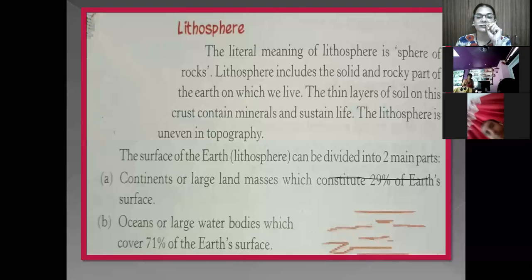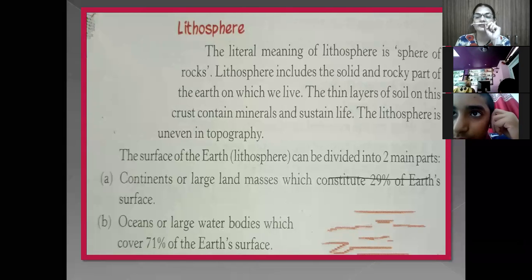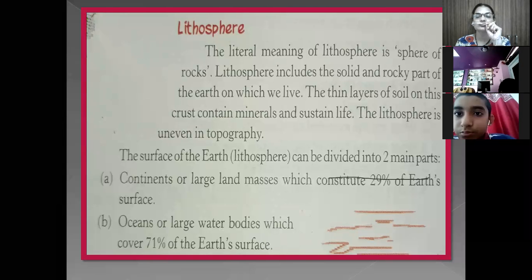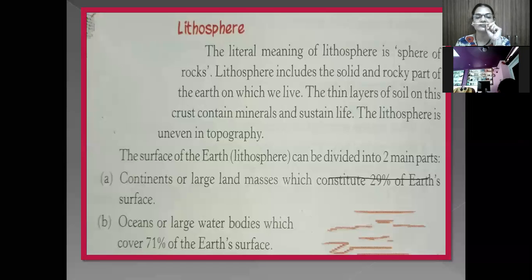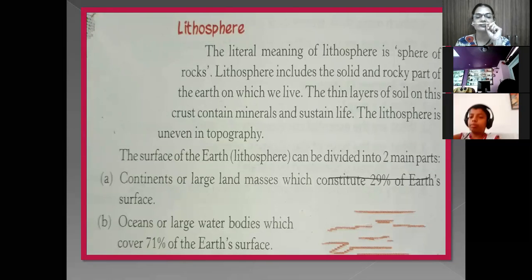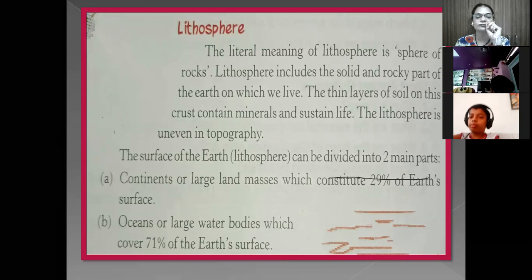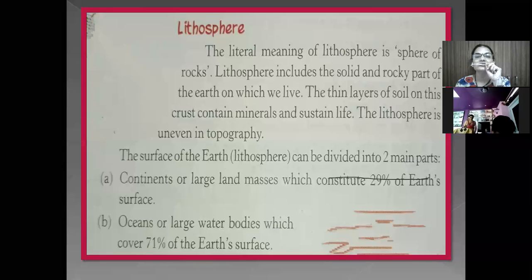First are continents or large land masses, which constitute 29% of the earth's surface. Second are oceans or large water bodies, which cover 71% of the earth's surface.